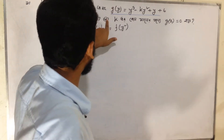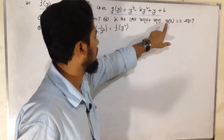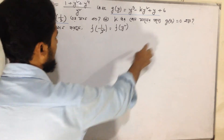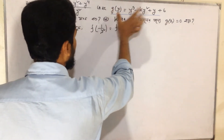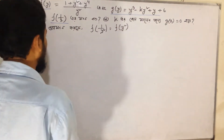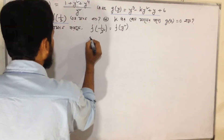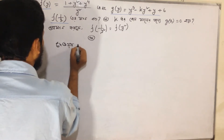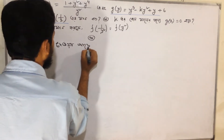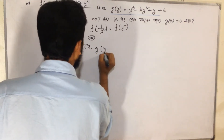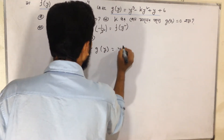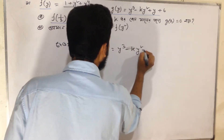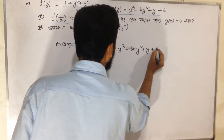We see the function here. We are working with g of x, which is equal to y³ minus k·y² plus y plus 6.